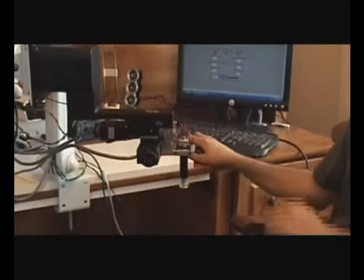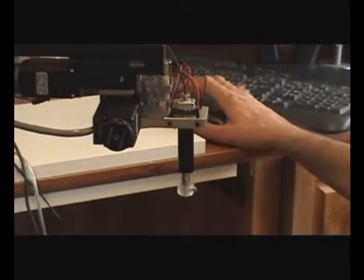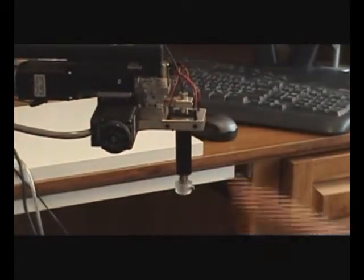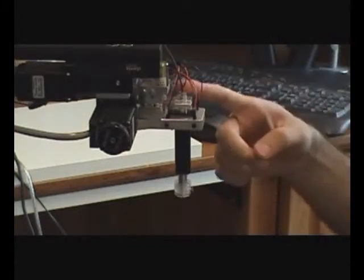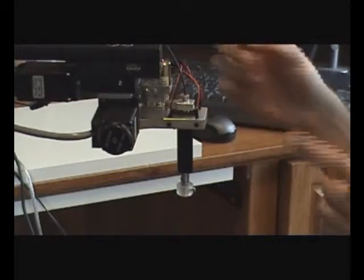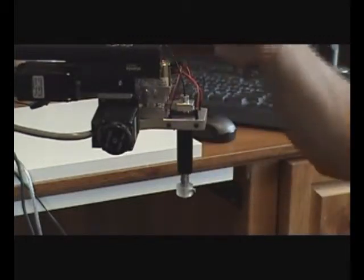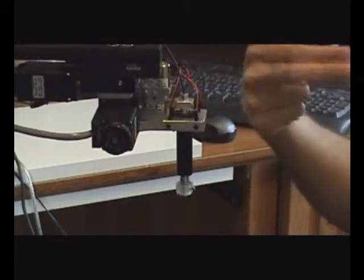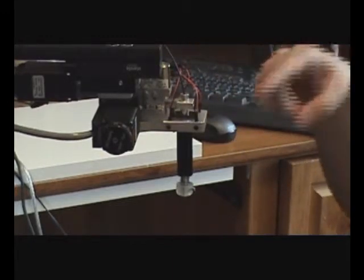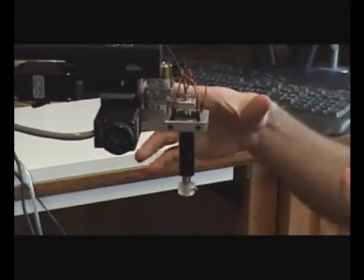Now we start the scanning, and as you can see, the solenoid initializes itself, and the first motor starts to move. Then when it travels its total travel, which is 8 millimeters, the second motor moves once in the Y direction, and this process repeats itself until it covers the whole area.